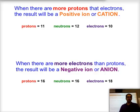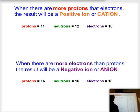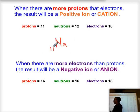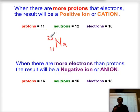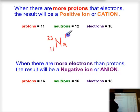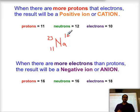In this example, 11 protons means it's sodium. With 12 neutrons, the mass number is 23. Since we have 10 electrons, the charge is 11 minus 10 which equals plus one. We write this as 1+; you can skip the '1' if you like, but always put the plus after the number.